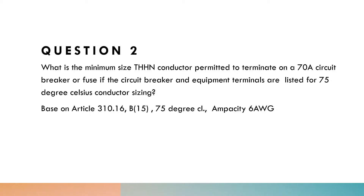In the case of THHN, the temperature rating of that conductor is 90 degrees Celsius, which of course exceeds the temperature rating of the equipment terminal. So this is how we interpret this: we have a 70-amp circuit breaker with terminals listed for 75 degrees Celsius. We're going to look within Table 310.15(B)(16) for the value of the closest THHN conductor within the range of 70 amps.